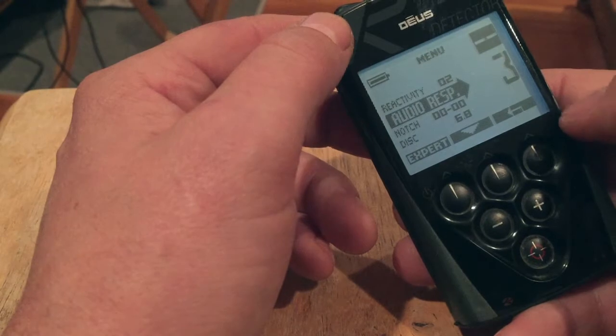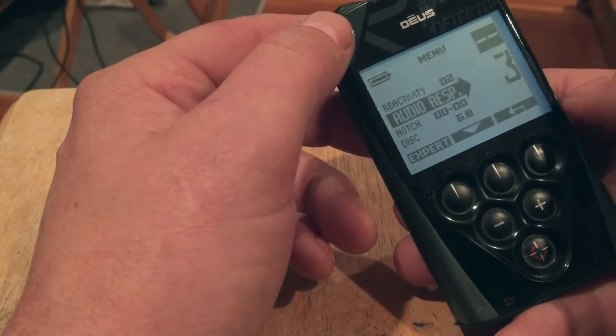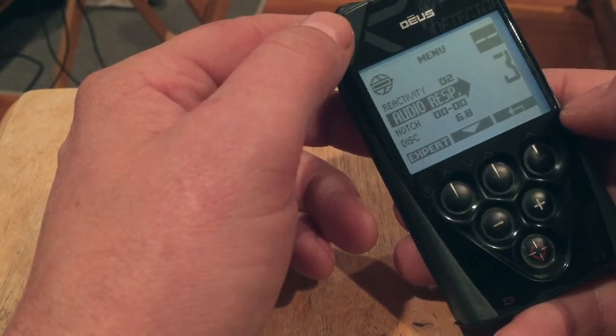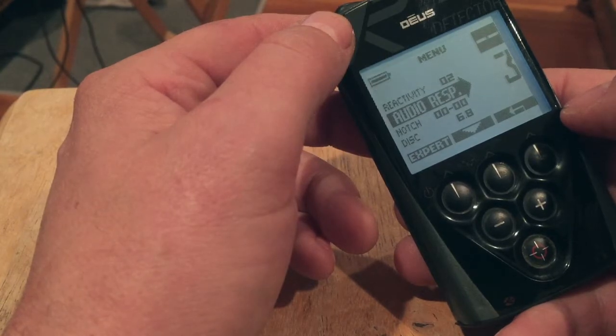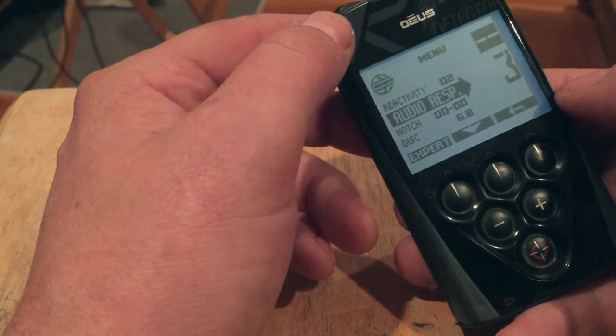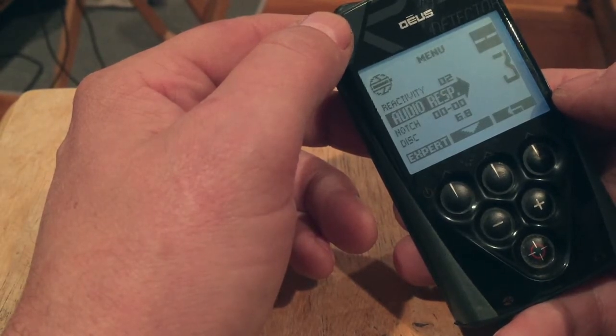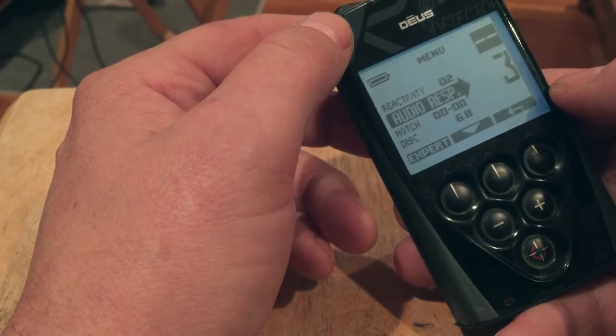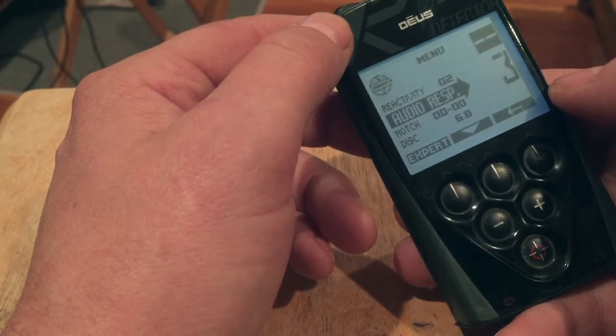Now I know a lot of people like to use 4 or 5, but you'll be constantly looking at your DEUS to see if the object is deep or not. At 3, deeper objects sound fainter and don't have a strong response.